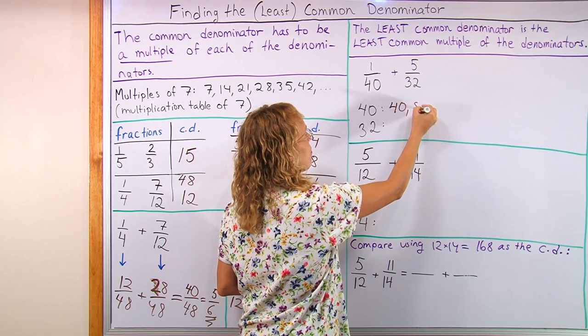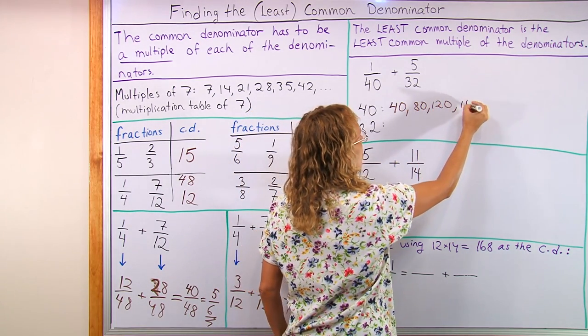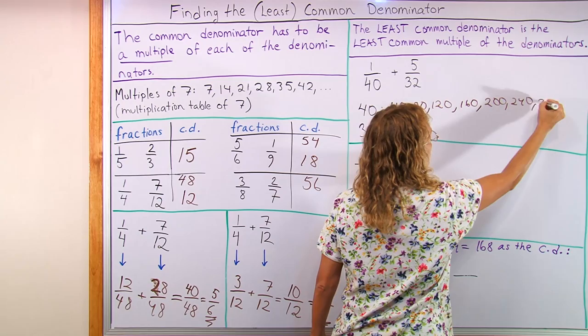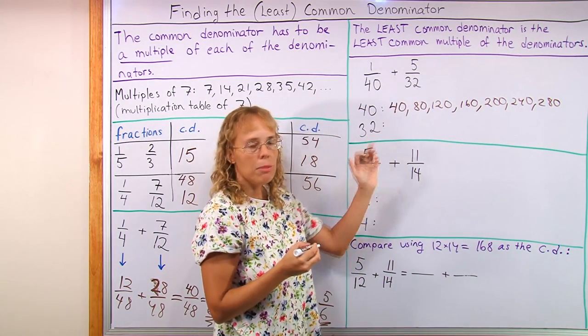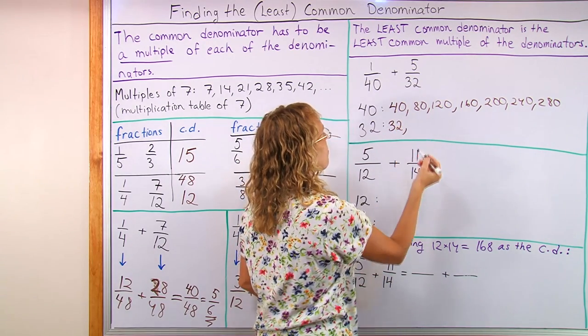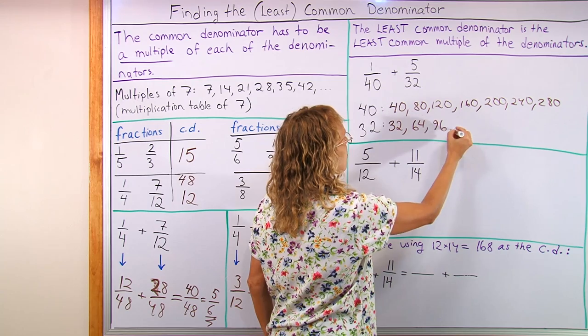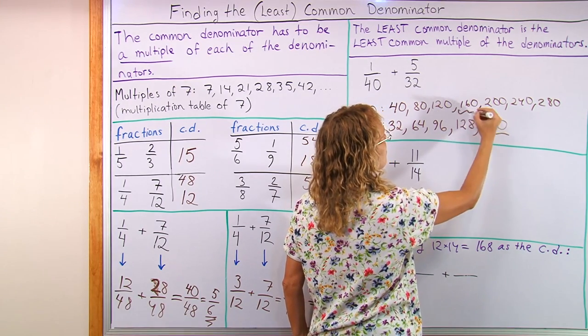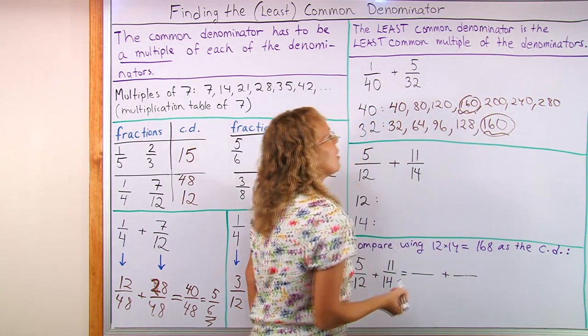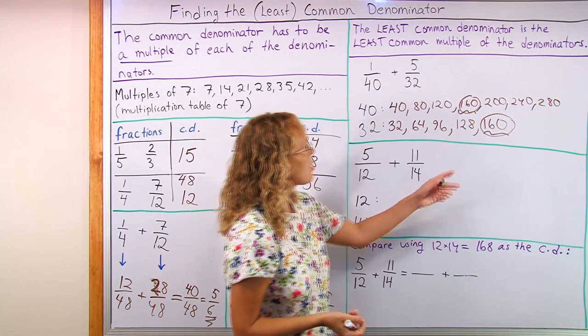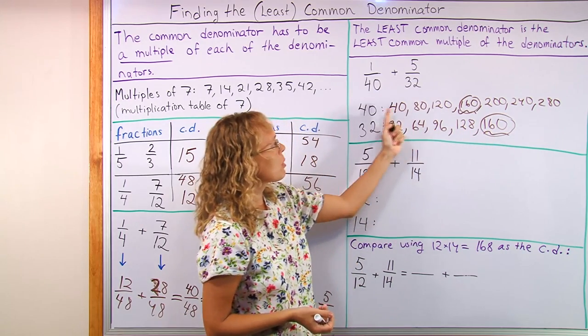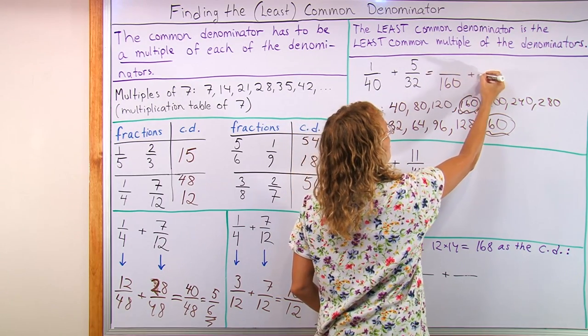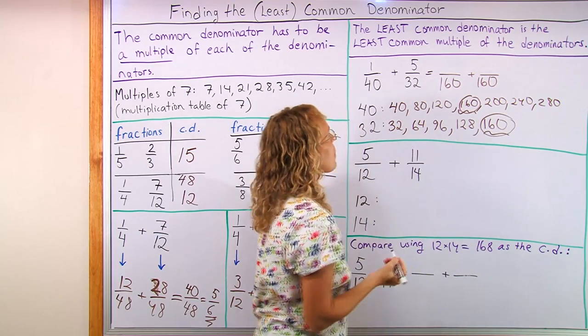Now, multiples of 40 would be 40, 80, 120, 160, 200, 240, 280. Okay, well, let's start writing the list of multiples of 32. 32, 64, 96, 128, and 160. Oh, okay. Now we found a common multiple, and that is also the least common multiple, because before that there were no numbers that were the same. So 160 is going to be our least common denominator.